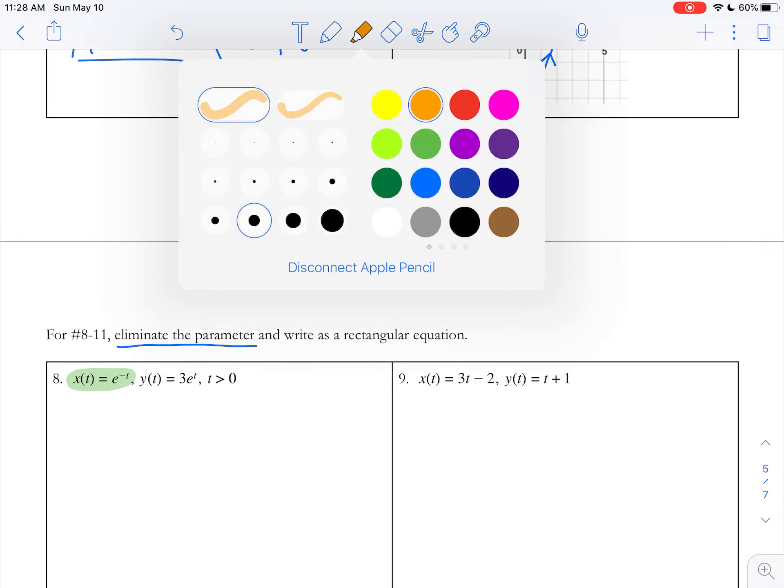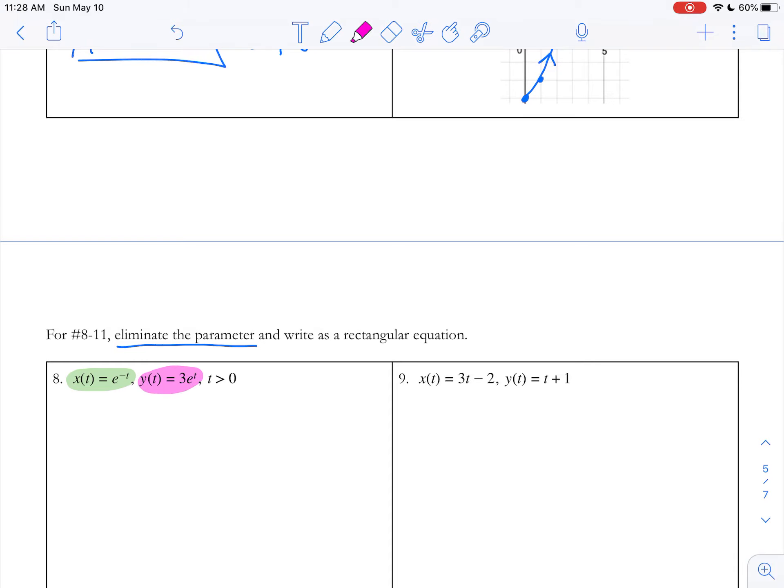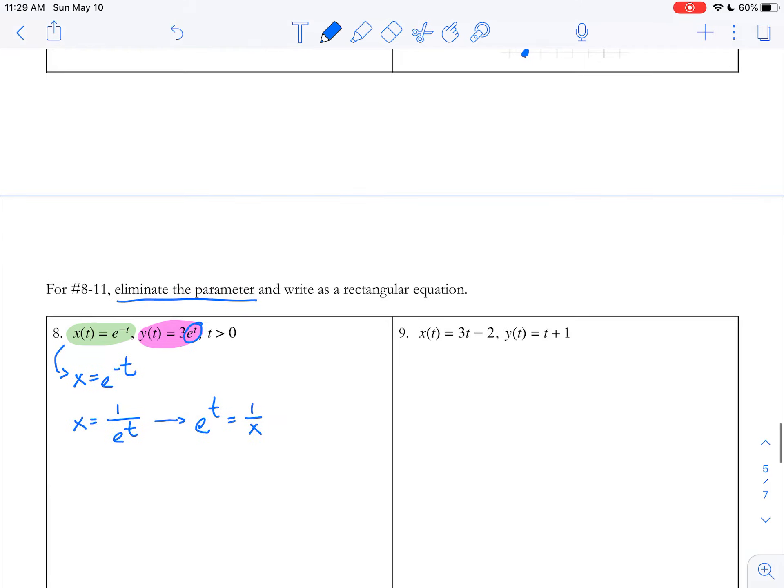For number 8, I have x = e^(-t) and y = 3e^t. I notice there's e^t here. I'm going to take this green equation, x = e^(-t), and rewrite it as x = 1/e^t using my rules of exponents. This allows me to isolate e^t as 1/x.